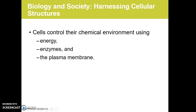Cells are able to control their chemical environments or internal environments using energy and enzymes, which are closely linked. The plasma membrane helps cells to maintain homeostasis in their internal chemical environment. Part one of this lecture is going to cover energy and enzymes, and then part two will cover how the plasma membrane is involved in that and cell transport.